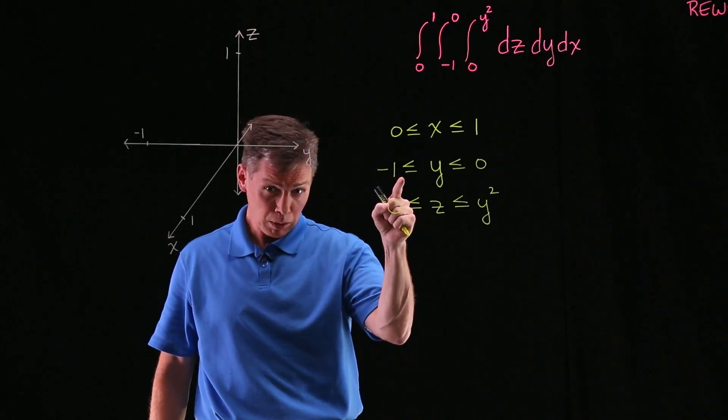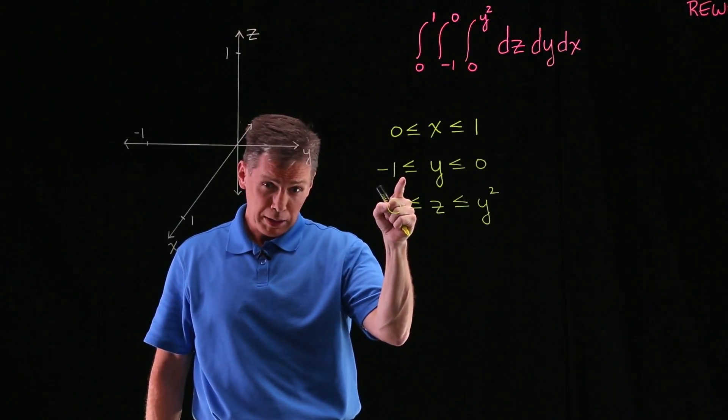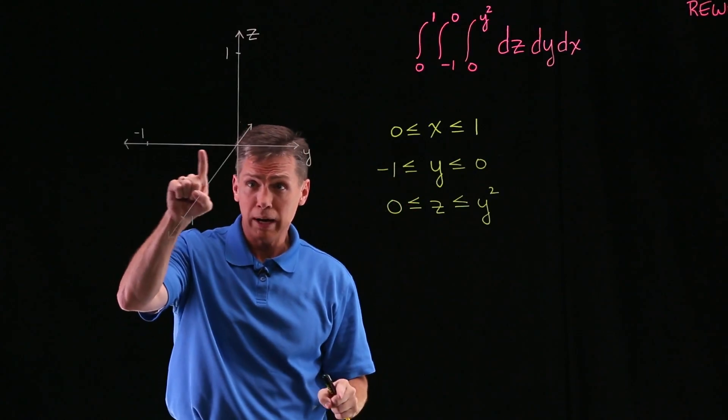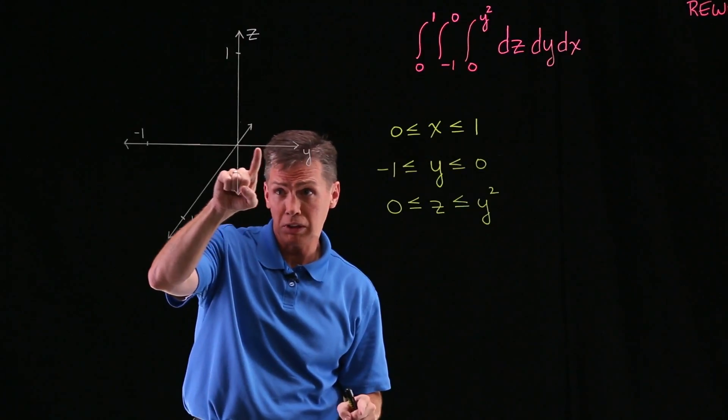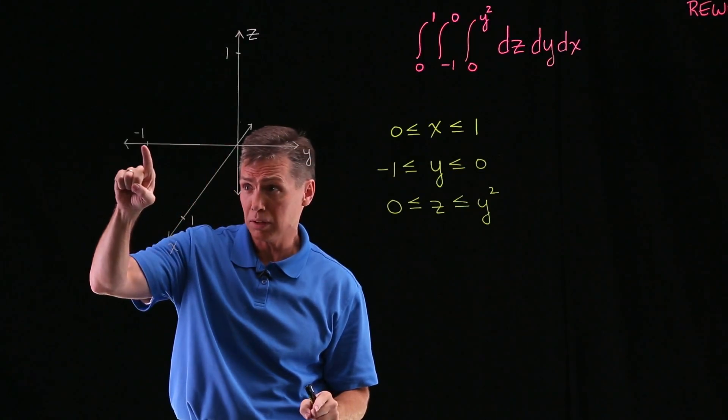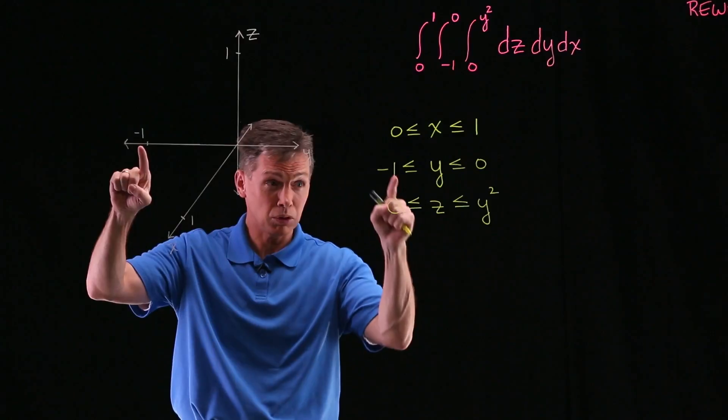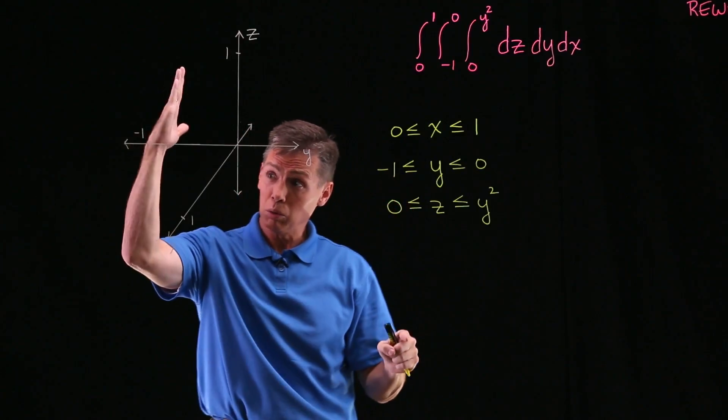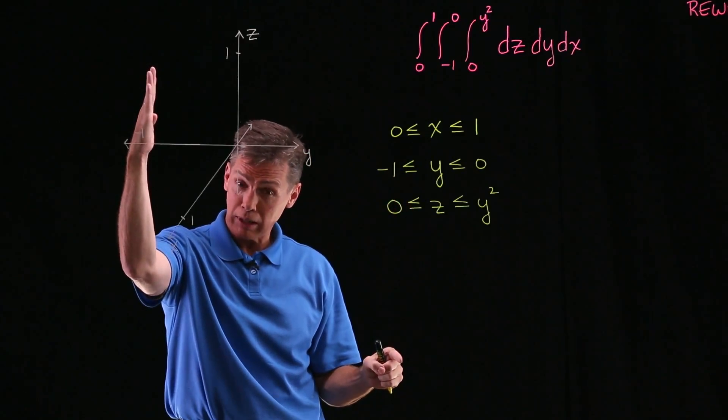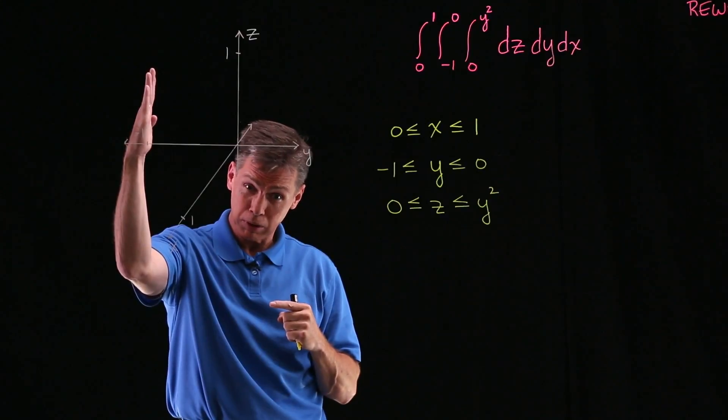Similar thinking, the second inequality. Your lowest y value will be negative 1. Here's your y-axis. And make sure you're seeing that over here to the left is your negatives. So no lower than negative 1. We won't draw any farther to the left than that y equals negative 1.